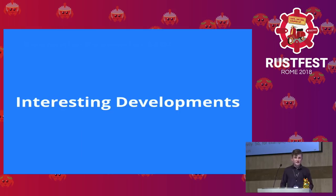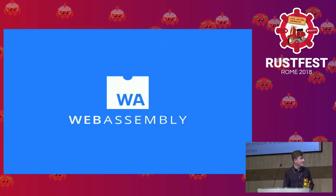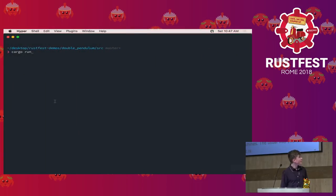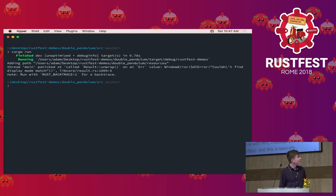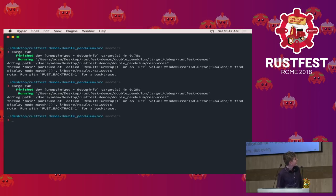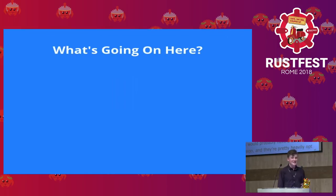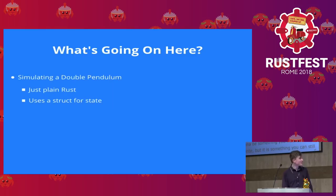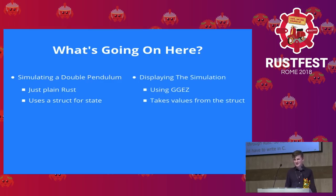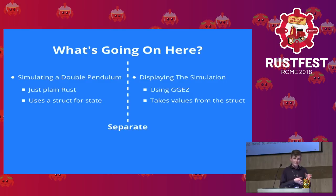I mentioned WebAssembly. I'm going to demonstrate something — a simulation of a double pendulum. You can break it into two parts: the simulation part, which is written in Rust, and a graphics part. I clearly made a mistake somewhere with the demo, but they're separate and not tightly coupled, which means I can take that Rust code, compile it to WebAssembly, and run it in the browser.